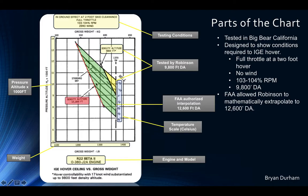Along the red line highlighted here, this is where the FAA told Robinson you cannot extrapolate the information any further. This line goes out to 12,600 feet density altitude. If you plugged those temperature and altitude combinations into an E6B or CX2, you would see approximately 12,600 feet — that's what this line represents.